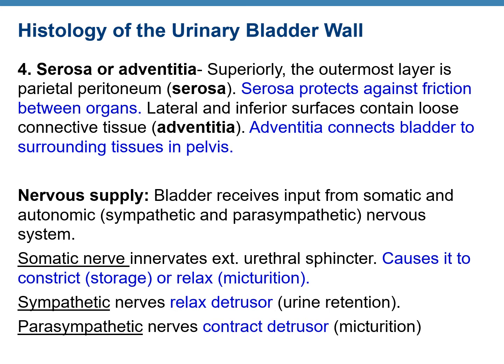Nervous tissue is also present in the urinary bladder. The bladder receives innervation from both somatic (voluntary) and autonomic (involuntary) nerves. Autonomic contains sympathetic and parasympathetic divisions. The somatic nerve innervates the external urethral sphincter — its function is to constrict (store urine) or relax (cause micturition/urine voiding). Sympathetic nerves relax the detrusor muscle causing urine retention, while parasympathetic nerves contract the detrusor muscle and cause micturition.